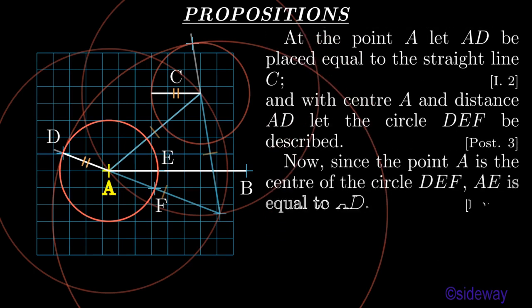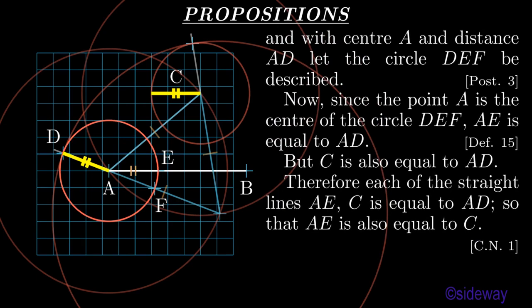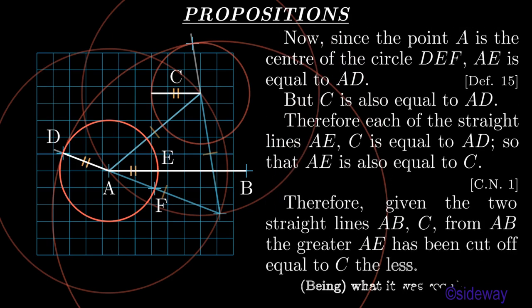Now, since the point A is the center of the circle DEF, AE is equal to AD, by Book 1 Definition 15. But C is also equal to AD. Therefore each of the straight lines AE and C is equal to AD, so that AE is also equal to C, by Book 1 Common Notion 1. Therefore, given the two straight lines AB and C, from AB the greater, AE has been cut off equal to C the less. Being what it was required to do.